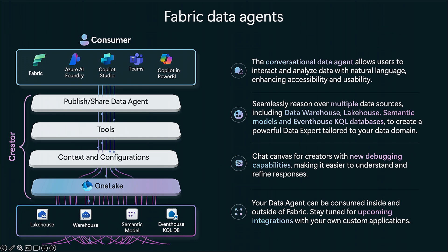So what is actually a Fabric data agent? A Fabric data agent is a conversational agent that allows you to interact with your data in natural language to gain valuable insights. It allows you to analyze and have a conversation with your data. Microsoft Fabric is where your data lives — we have one lake where all your data lives. You can build this data agent over data in a lakehouse, a warehouse, real-time data known as a KQL database, or Power BI datasets, also known as semantic models.